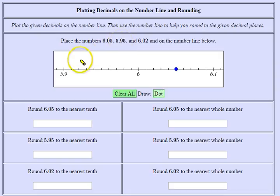5.95 or 5 and 95 hundredths. Here's 5.9. I want to go 1, 2, 3, 4, 5 hundredths more.